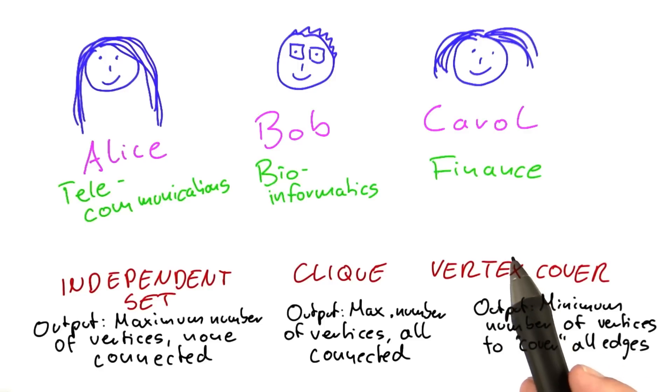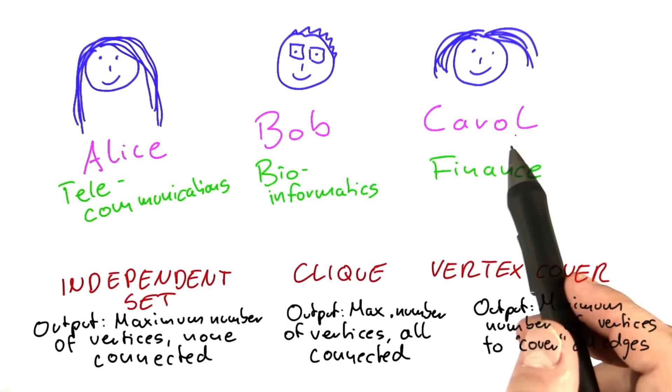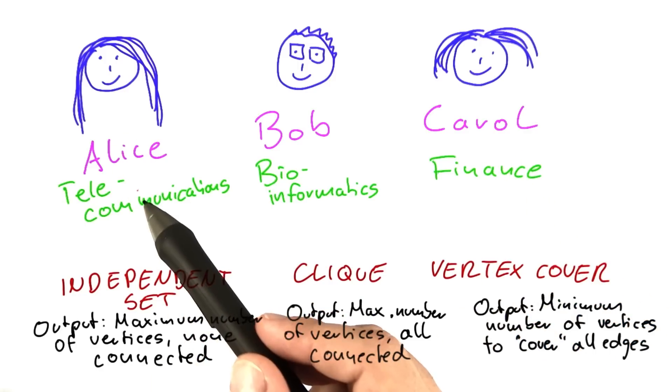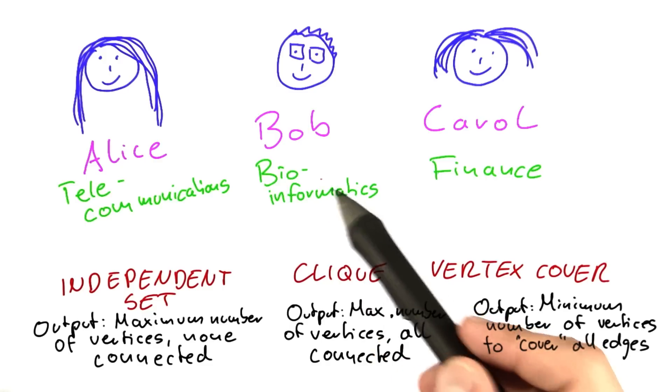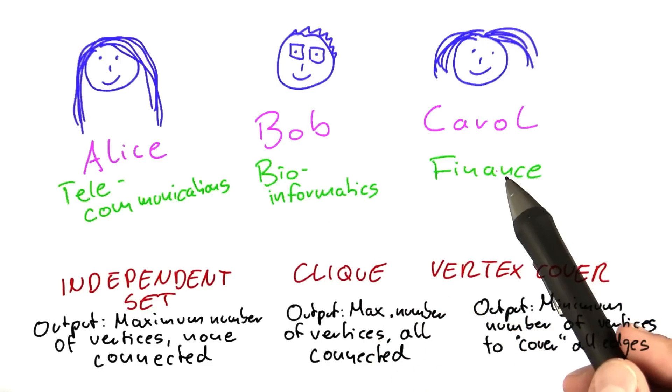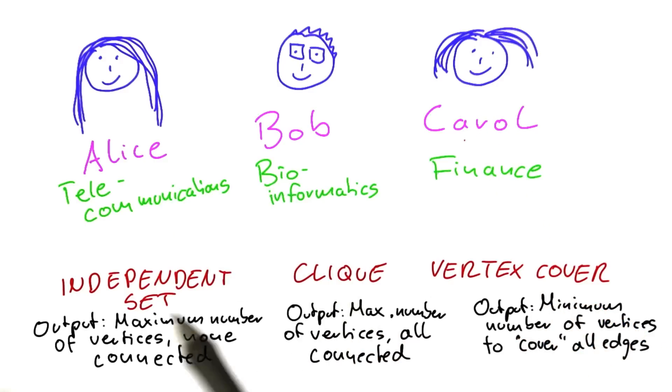So here's our first quiz, and I would like to see if you remember which of these computer scientists—Alice working in telecommunications, Bob working in bioinformatics, and Carol working in finance—which of these computer scientists were working on which of these problems here.